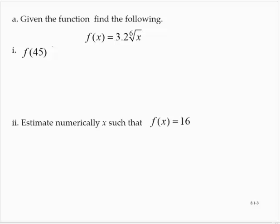Given the function, find the following. We're told that the function f of x is equal to 3.2 times the 6th root of x. And we're asked to find f of 45.